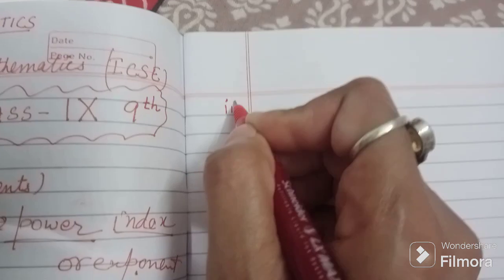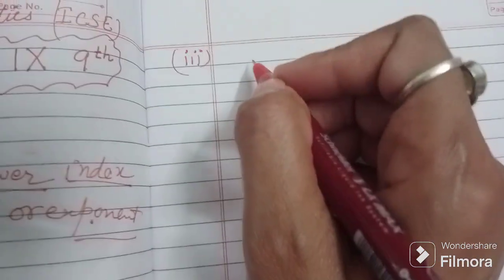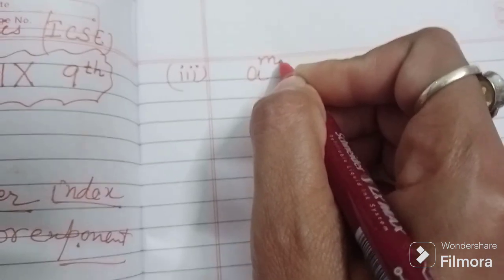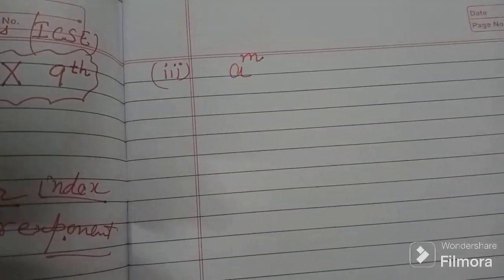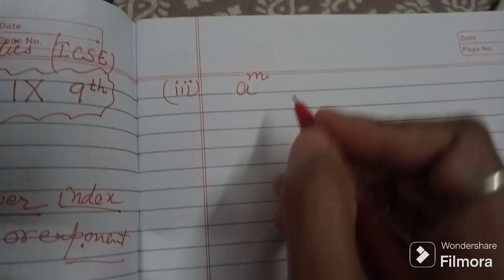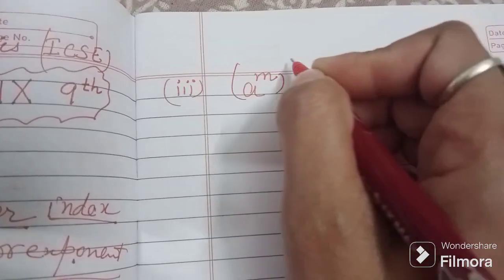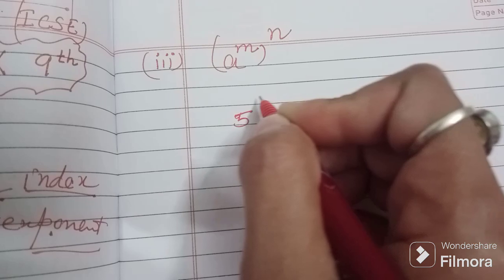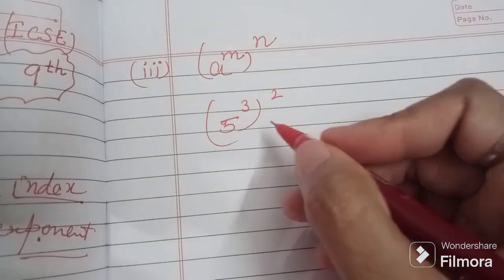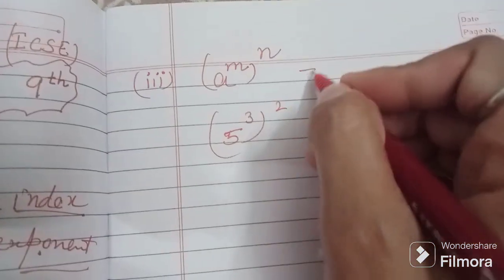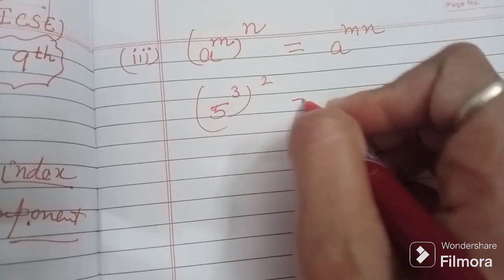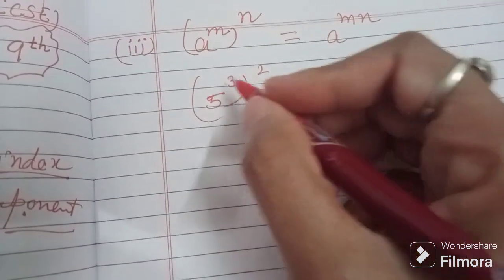Third law is if you are having a number having power m and power over the power, one power to one power, power over the power, so what would you do is multiply. Multiply the powers. You must remember these laws to keep.